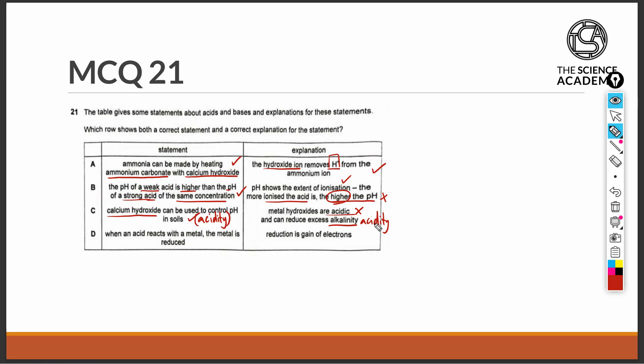Option D states that when an acid reacts with a metal, the metal is reduced. Let's see if this is true. I'm going to use sodium as a metal and hydrochloric acid as an acid. We know that when a metal reacts with an acid, a salt is produced and hydrogen gas is also produced. From pure metal to becoming a metal ion in the salt, we know that sodium went from Na to Na+. The increase in the oxidation state of 0 in Na to +1 in Na+ shows that sodium has been oxidized. So in this case, in the metal acid reaction, the metal is going to be oxidized. So it is incorrect to say that the metal is reduced.